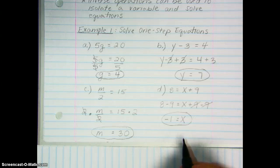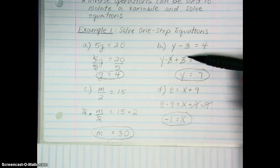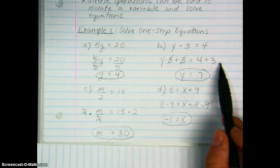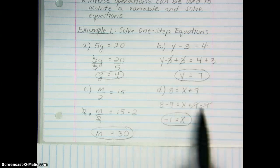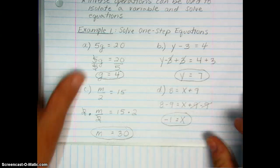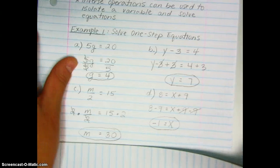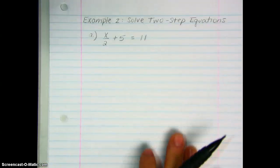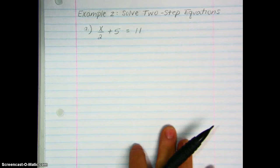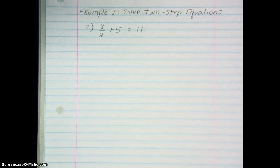Now let's look at some two-step equations. You'll notice in the one-step examples, it took just one step to solve — we had to add three to both sides, or subtract nine. In these next examples it's going to require two steps, because there's more than one operation being performed on the variable.